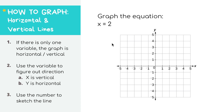To graph horizontal and vertical lines, step one is just to recognize that you're drawing one of them. If there's only one variable in the equation, like just x or just y, you know you're drawing a horizontal or vertical line. Step two: if you just see an x, you know your graph will be a vertical line going up and down. If you just see a y, your graph will be a horizontal line, going left to right.